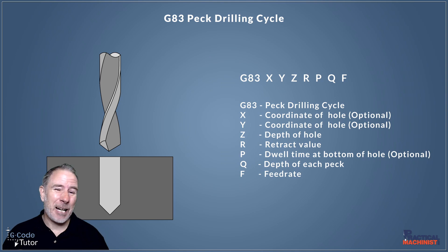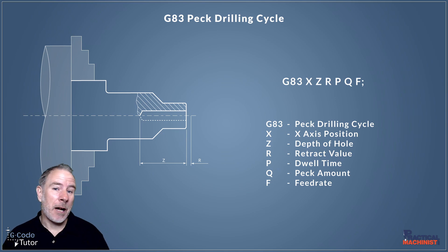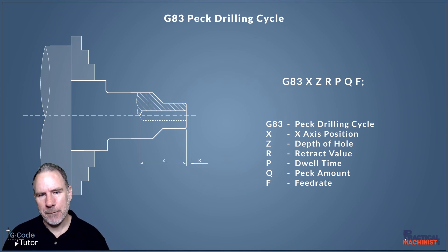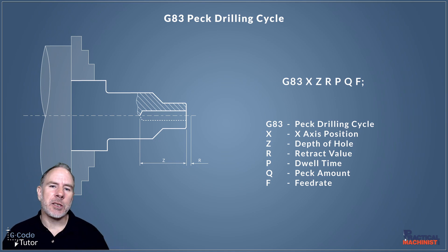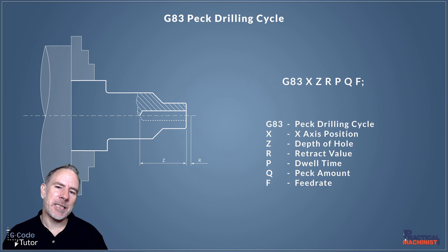Let's see how this compares to a lathe. It's pretty similar — we don't have the Y-axis because we're on a two-axis machine, but everything else is pretty much the same and it works very similarly on a CNC lathe. With a drilling cycle on a lathe, we tend to only drill one hole. We wouldn't drill multiple holes with a drilling cycle unless we are doing off-center work, but for on-center work it works very similarly.